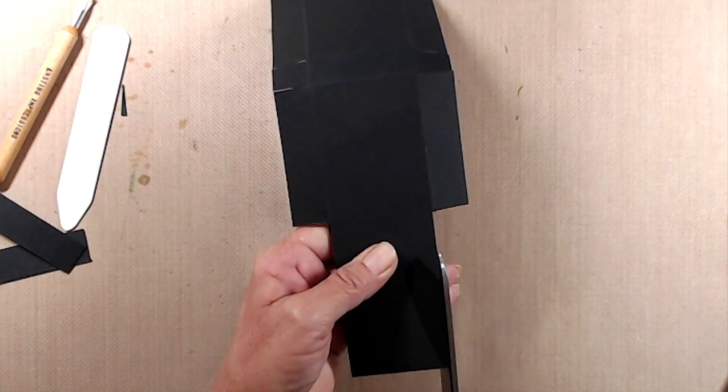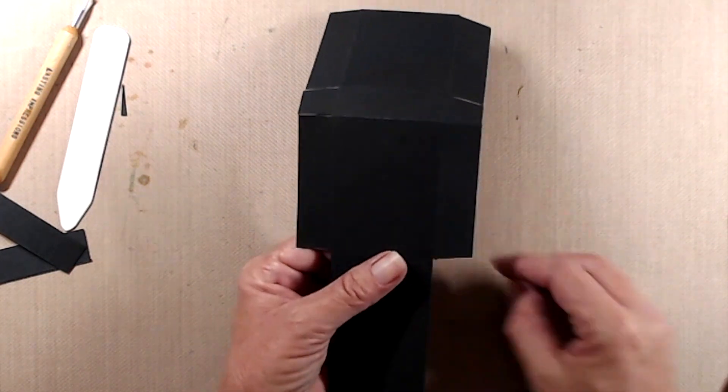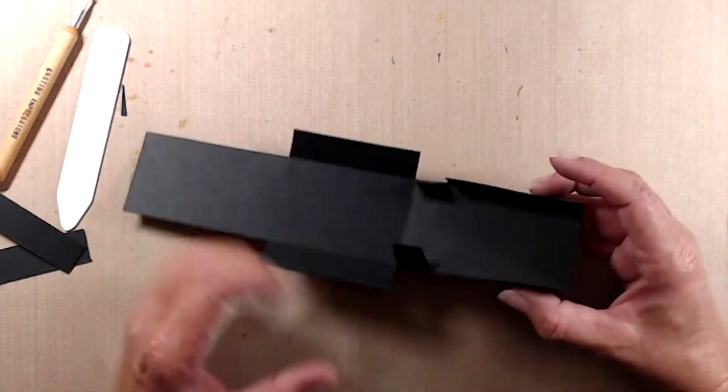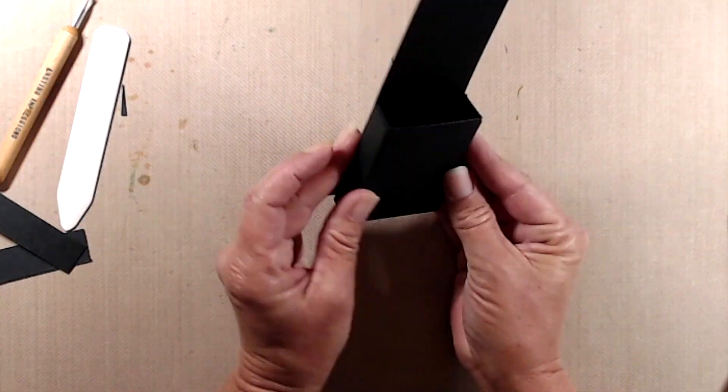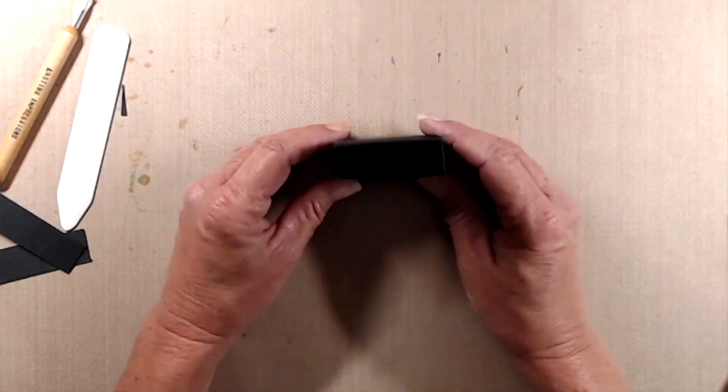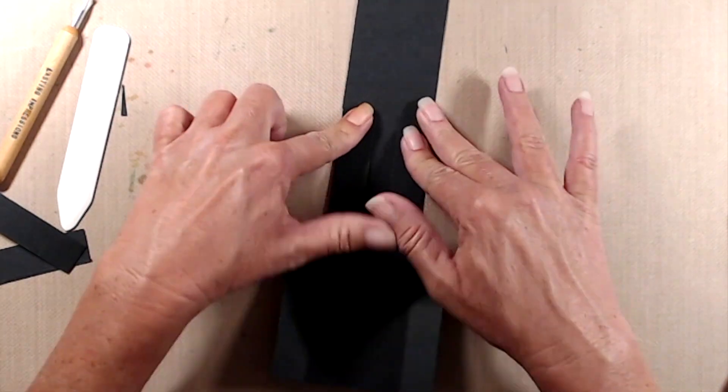If you prefer, you could use your paper trimmer to cut out that long rectangle as well. To put the box together, it's really very simple. You're going to take the smallest flaps and you want to push those on the inside. And then the short piece at the bottom is going to fold up and be adhered to the flaps on the long piece in the back.